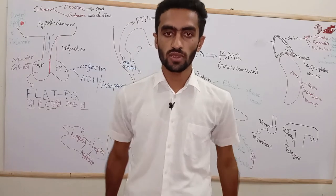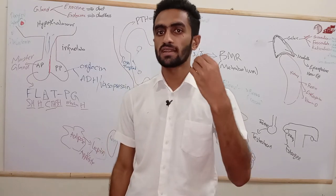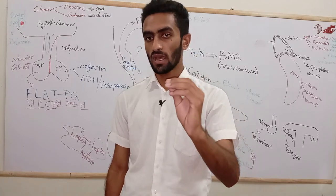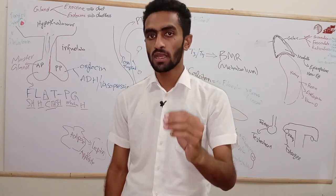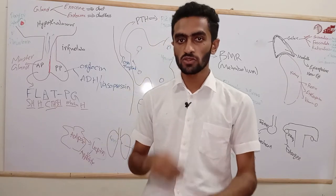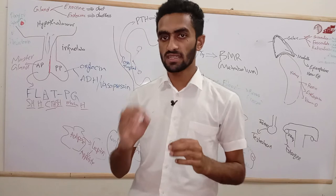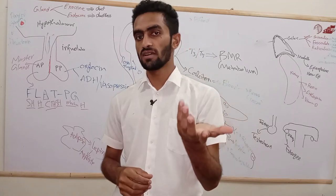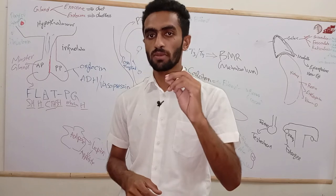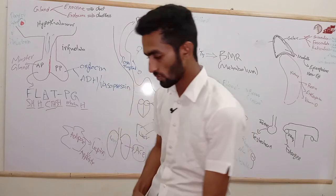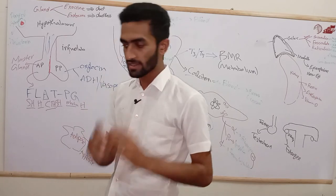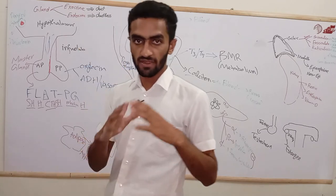The endocrine glands are ductless — they secrete their secretions, for example hormones, through the bloodstream. Exocrine glands, on the other hand, have ducts — they secrete secretions like saliva or pancreatic juice through the pathway of a duct. So the first difference between exocrine and endocrine is duct versus ductless.